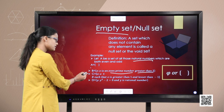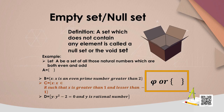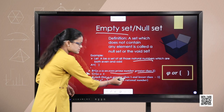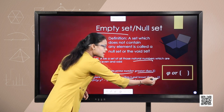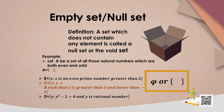The next example is set C. C is the set of all those real numbers such that x is greater than 1 as well as less than minus 1. We cannot have a number which is greater than 1 and less than minus 1 simultaneously. So the set C is also an empty set.